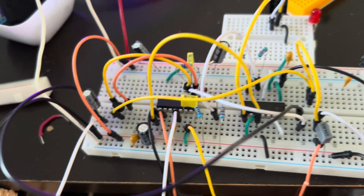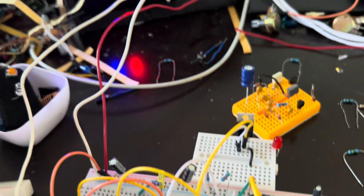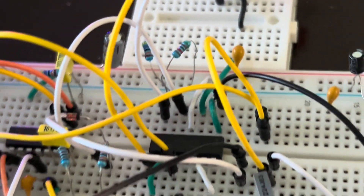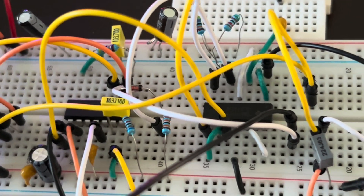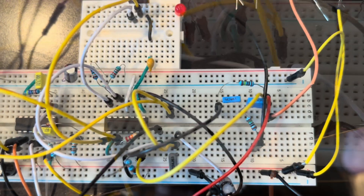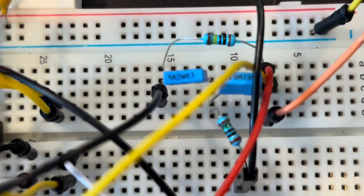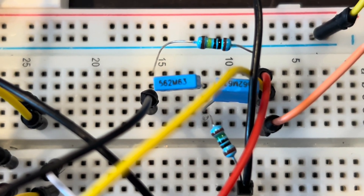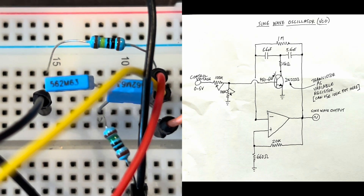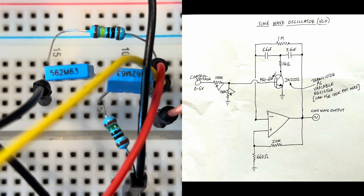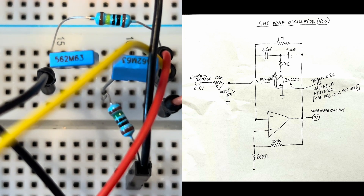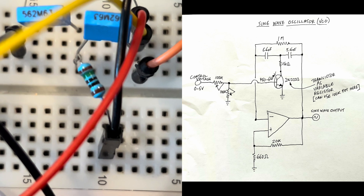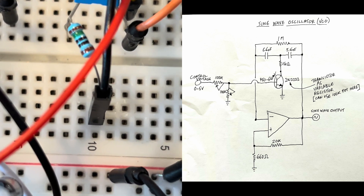This is an example of sample and hold voltages serving as control voltages for a sawtooth wave oscillator. Now let's try it on the sine wave oscillator. Here is the bridge-T sine wave oscillator, which consists of a T circuit with two 5.6 nanofarad capacitors and a 150 ohm resistor to ground, in series with a potentiometer.